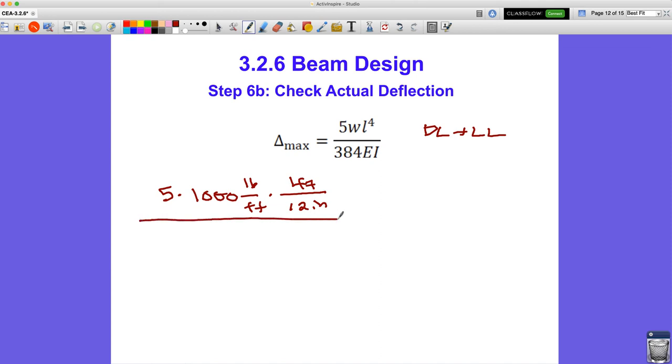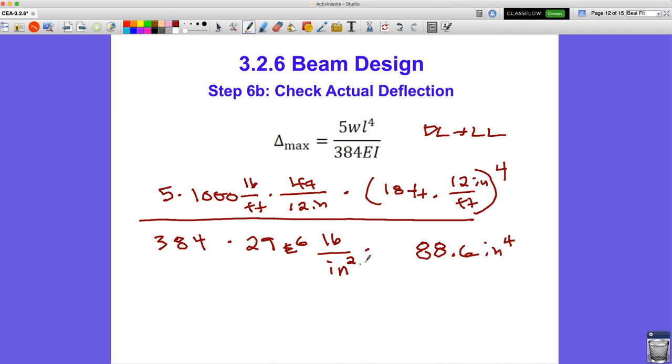And this is all going to be in the numerator times L to the fourth, and that's 18 feet. Here's where we go times 12 inches per foot. But that whole thing is to the fourth power, the 18 times 12 to the fourth power. And in the denominator, we have 384, which is unitless, times 29,000, I'll just write E to the sixth. And that's pounds per square inch, psi is the unit for that, times I is from the table. So we've got to go back and look up our I. And I believe it's 88.6 inches to the fourth.